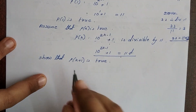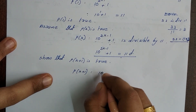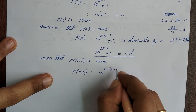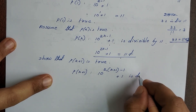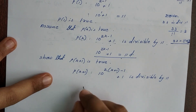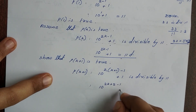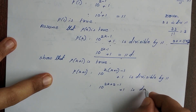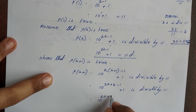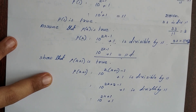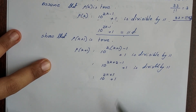To show P of k plus 1 is true, we replace k with k plus 1. So we need to show that 10 raised to 2 into k plus 1 minus 1 plus 1 is divisible by 11. That simplifies to 10 raised to 2k plus 2 minus 1 plus 1, which is 10 raised to 2k plus 1 plus 1 is divisible by 11.